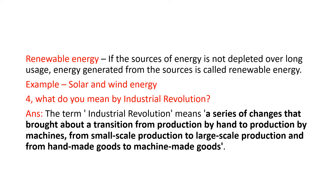In the early period, people used to do whatever production they needed with the help of their hands. Man did everything by hand before the invention of machines. Later on, man developed machines which made his tasks easier and quicker. People started making things in factories on a mass scale, and this gave rise to the Industrial Revolution.